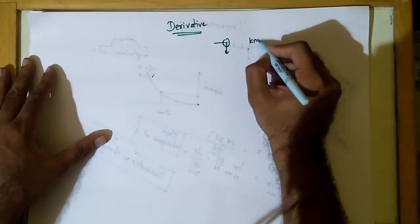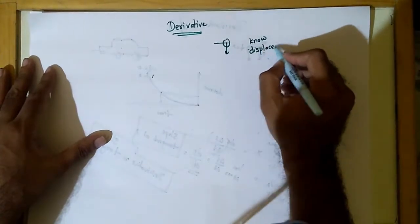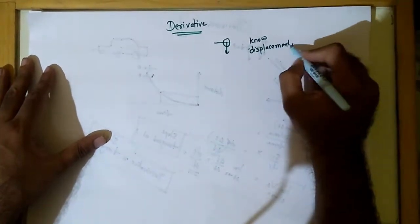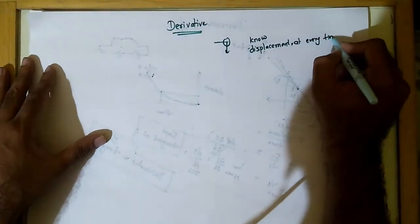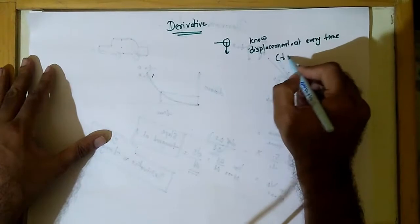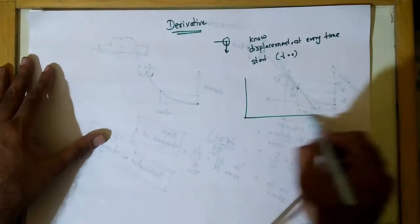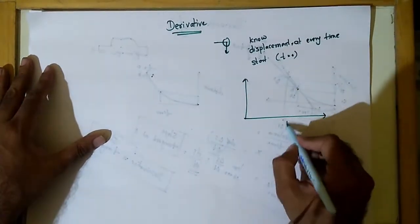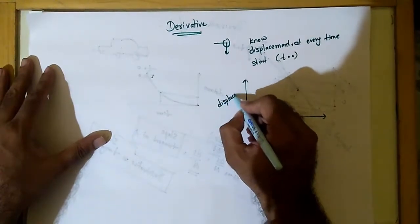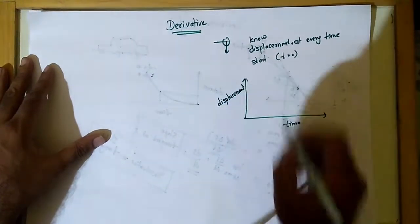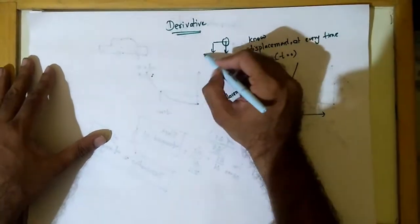I know displacement at every time. Suppose I start when time t equals zero and if I plot a curve - this is time and this is displacement - so I will get a curve like this. Displacement is positive in the downward direction.